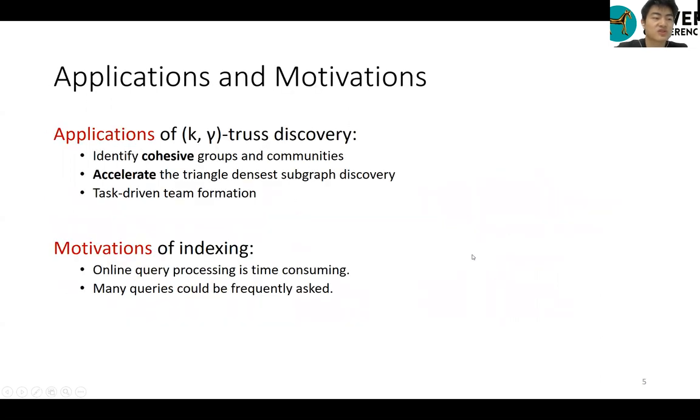The discovery of k-gamma-truths can be beneficial for a wide range of application domains. For instance, k-gamma-truths can model cohesive groups or communities. It can be used to speed up the computation of finding other dense subgraphs, e.g. probabilistic triangle-dense subgraph discovery. It can also be applied to accelerate task-driven team formation.